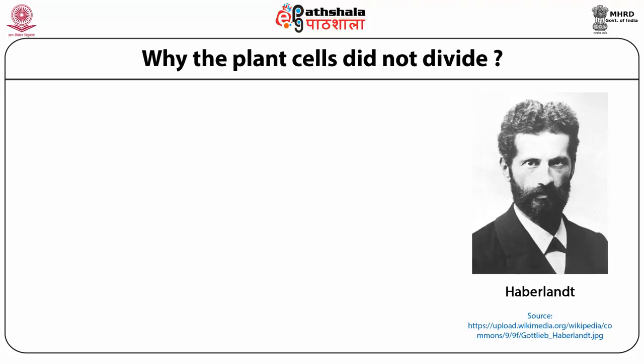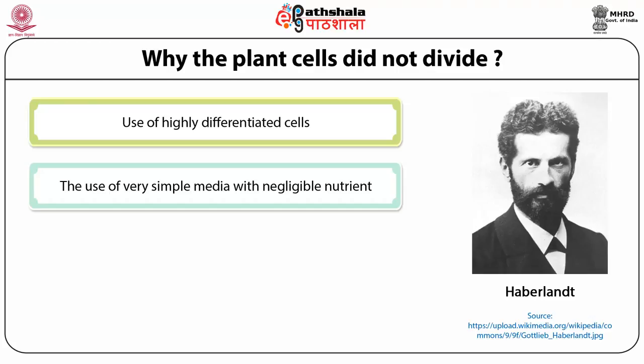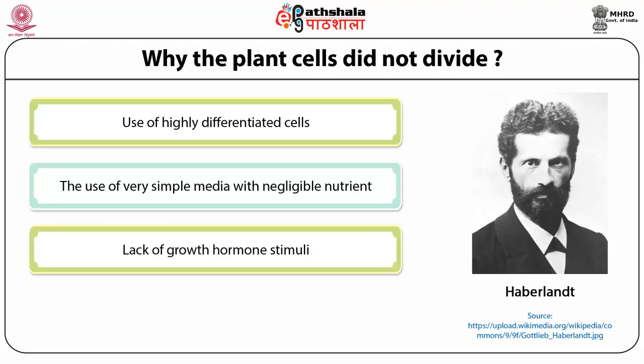The reason was that he started with highly differentiated tissues. Number two, the solution or media he used was a simple solution with very few salts and sucrose, and therefore the plant was perhaps not getting enough nutrients. And third — which you'll learn later — there were no growth hormones present in the media.